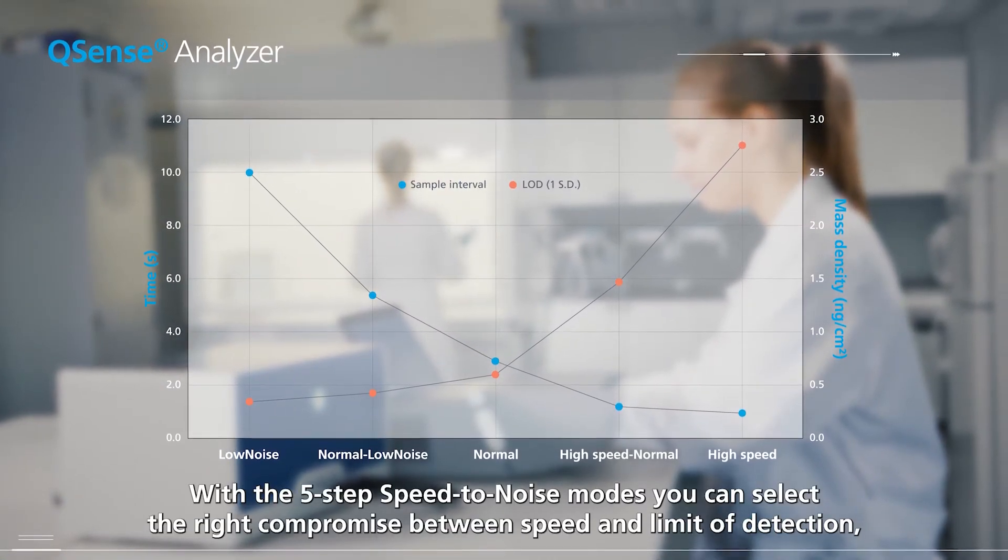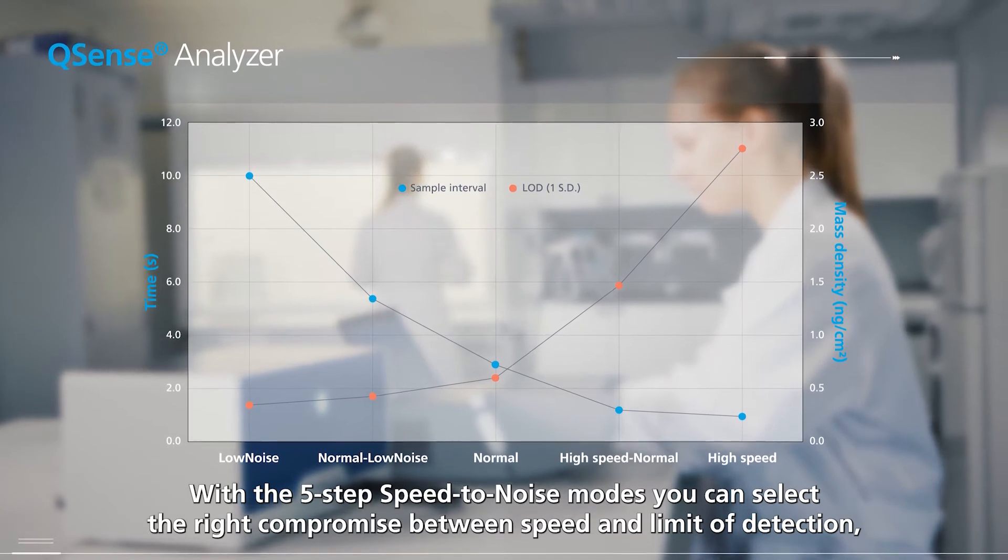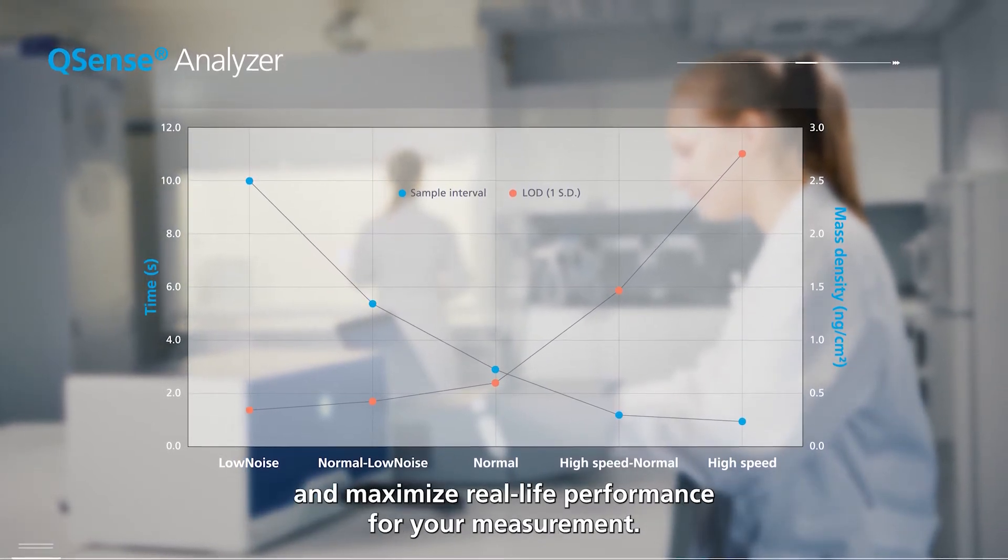With the five-step speed to noise modes, you can select the right compromise between speed and limit of detection and maximize real-life performance for your measurement.